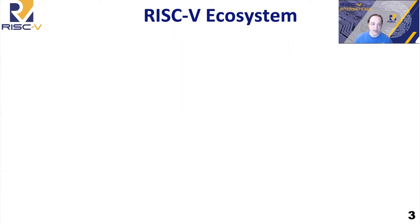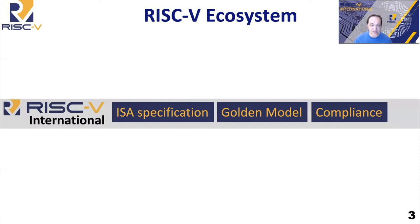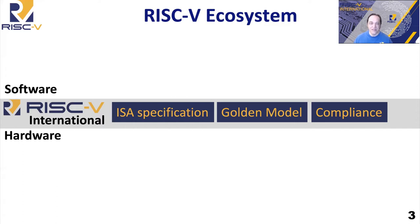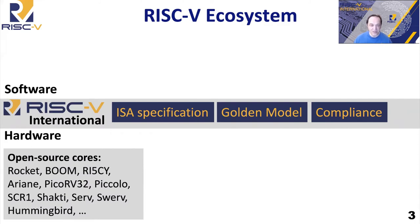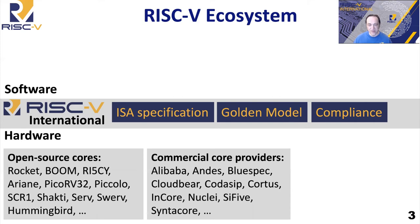Let's talk about the ecosystem. RISC-V International sits in the middle and really manages the ISA specification, as well as the golden model and the compliance tests. That spec is really the bridge between software and hardware. The hardware implementers — of which there are many — take that specification and go build designs. One thing people often mistake about RISC-V is saying it's an open source processor, which is not correct. RISC-V is an open specification, and because the spec is open, it means you can have open source processors.